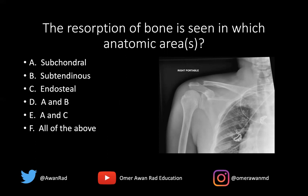If we take a look here, we notice that there's resorption of bone along the distal clavicle — distal clavicular osteolysis. We can see that it almost looks like a rat has eaten out a piece of that bone along the distal clavicle. This would be subchondral because this is at the level of a joint, the acromioclavicular joint. But that's not where it ends. If you look along the medial aspect of the humeral head at the glenohumeral joint, there's also an area of resorptive change — also subchondral. So we have two examples of subchondral resorption here.